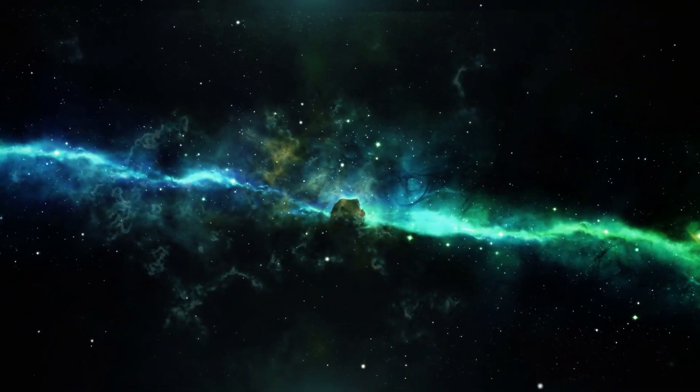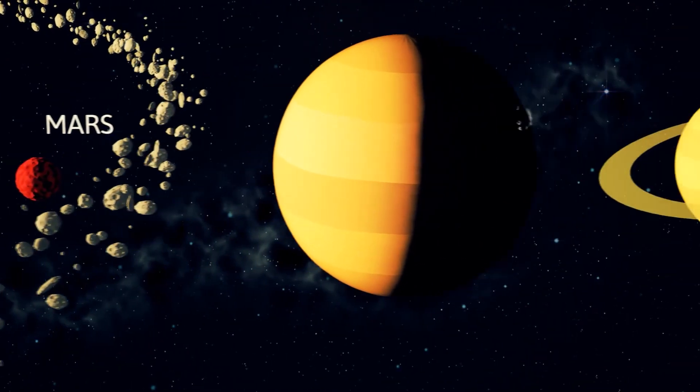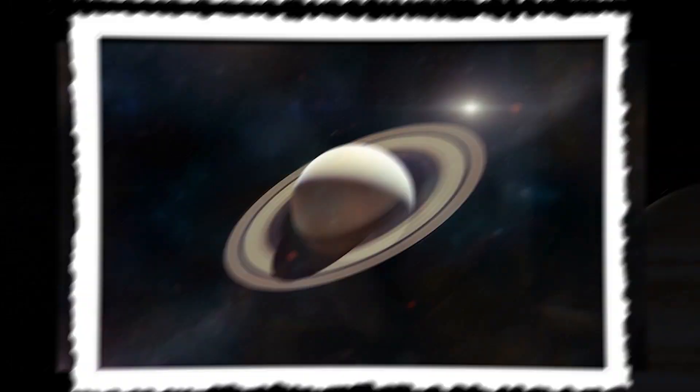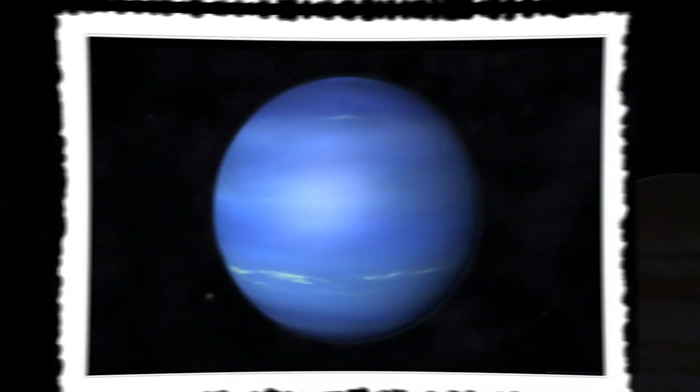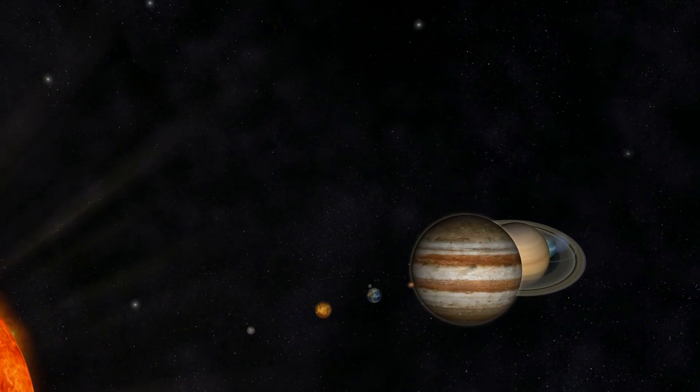We may learn more about gas giants in general and the similarities and differences between Jupiter and other solar system gas giants like Saturn, Uranus, and Neptune by comparing and contrasting Jupiter with these other planets.